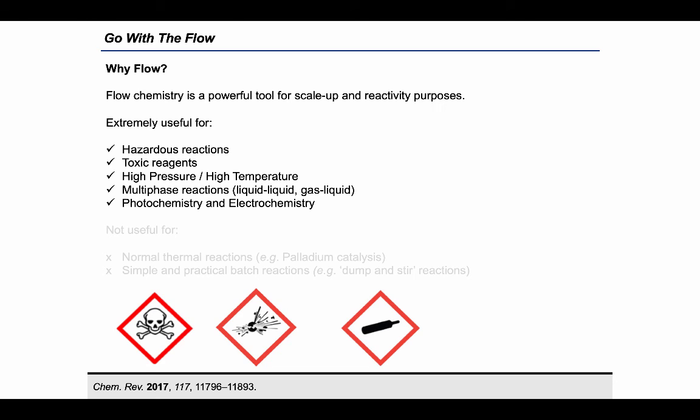As mentioned before, flow chemistry is the perfect environment to carry out multiphasic reactions. And finally, it has been demonstrated that merging photochemistry and electrochemistry with continuous flow technology provides much more effective processes.